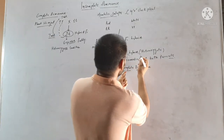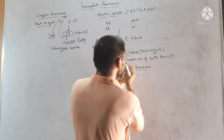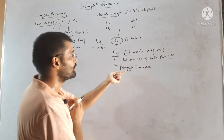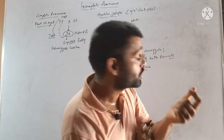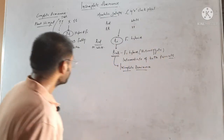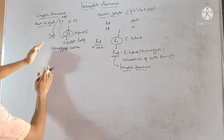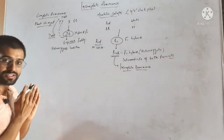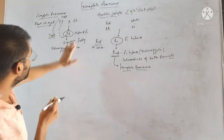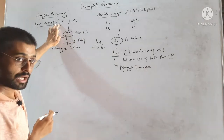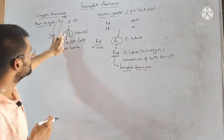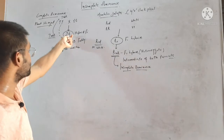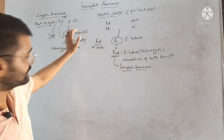So, when the heterozygous or F1 hybrid is intermediate of both the homozygous parents, it is called incomplete dominance. Now, in the case of the tall plant, the heterozygous is tall because capital T is dominant and it is expressing itself while suppressing the small t allele.